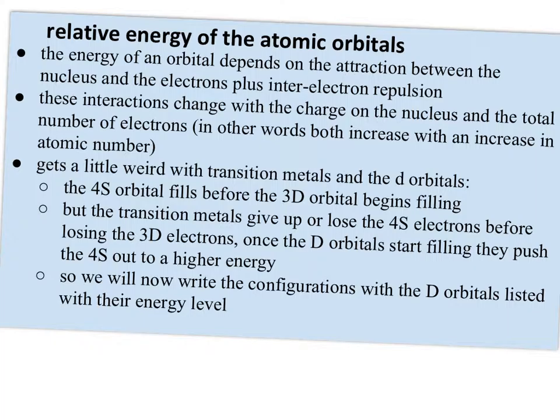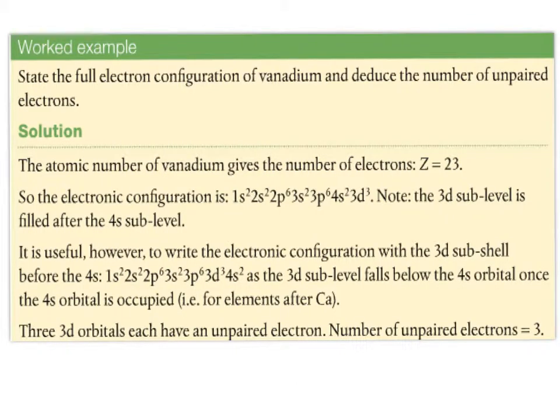So that means IB and most scientists actually write configurations with the d orbitals listed with their energy levels. So 3s, 3p, 3d, then 4s. So we write them in the way the electrons are going to be pulled off, not in the order that they fill up. So here's an example. It says the atomic number of vanadium gives the number of electrons 23. So electron configuration is going to be 1s2, 2s2, etc. And you know, it's initially here. They write it just like we did last year, 4s2, 3d3. But we actually, it's more acceptable to write it this way with the 3d3 and then the 4s2. Since the 3d sub-level is going to fall below the energy of the 4s once the 4s is occupied. And then as far as unpaired electrons, since only two can fit into there, there's no unpaired electrons here. But the 3d orbitals will each have an unpaired electron for a total of three. And unpaired electrons is something that's going to be important as we continue this year.